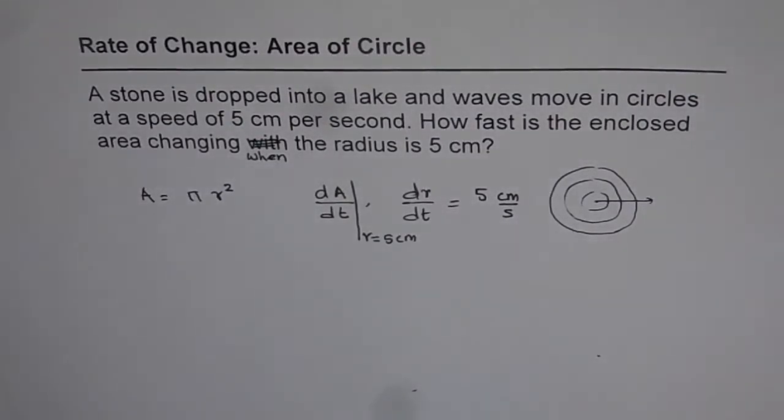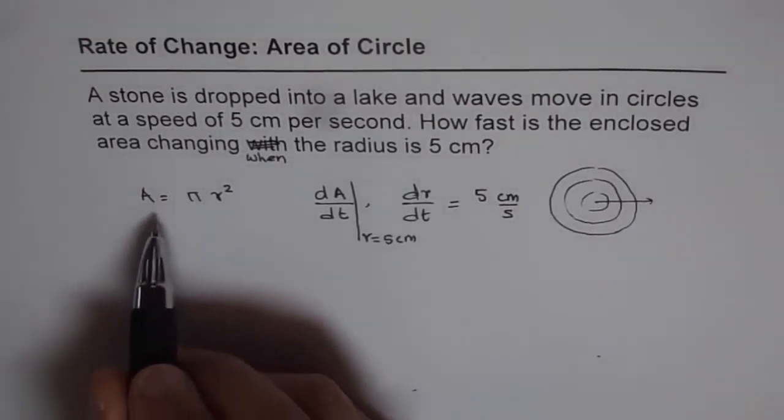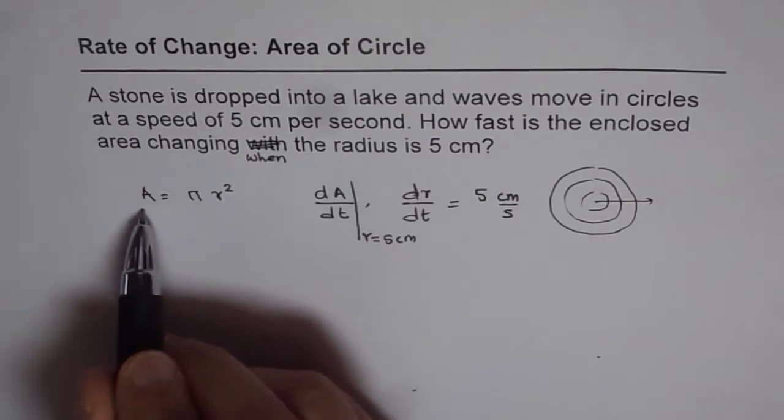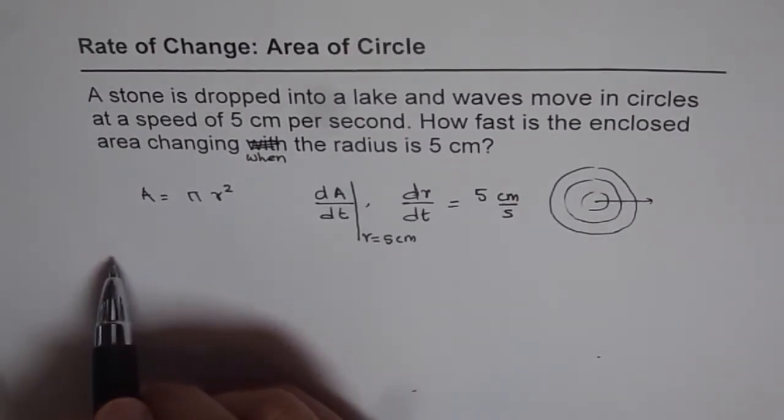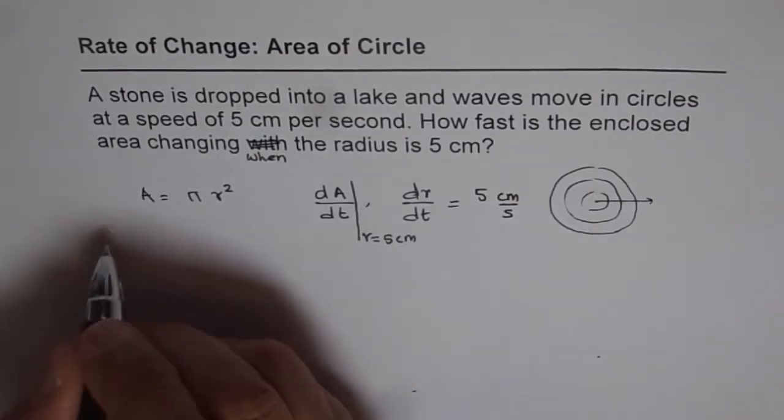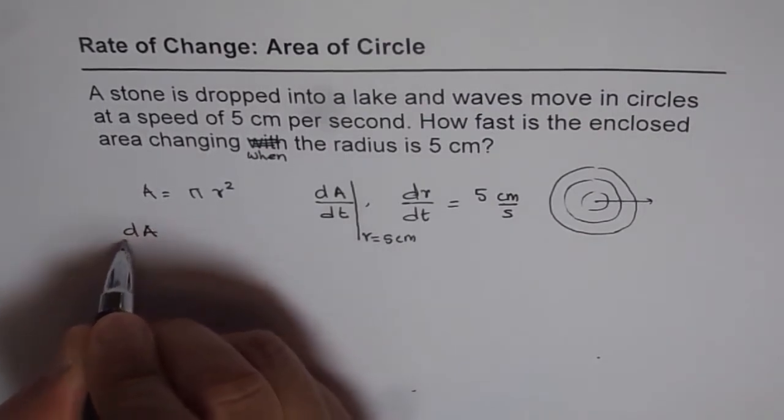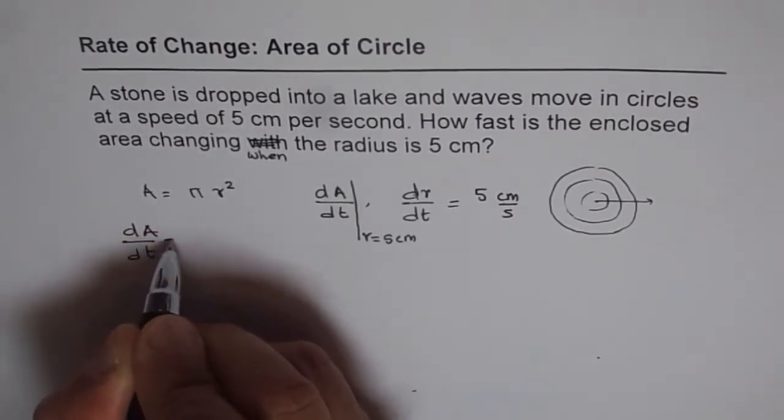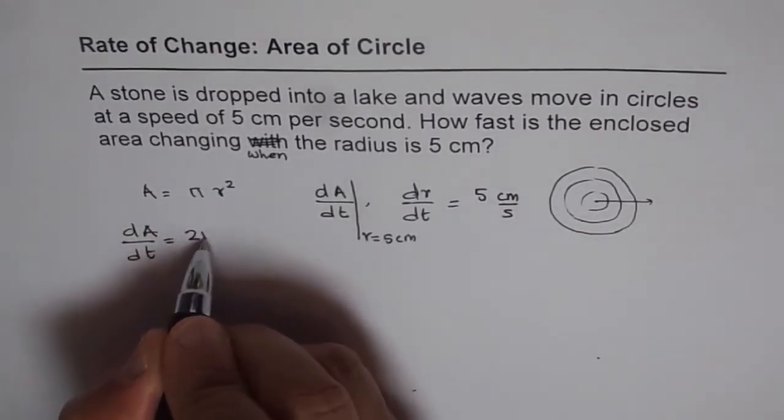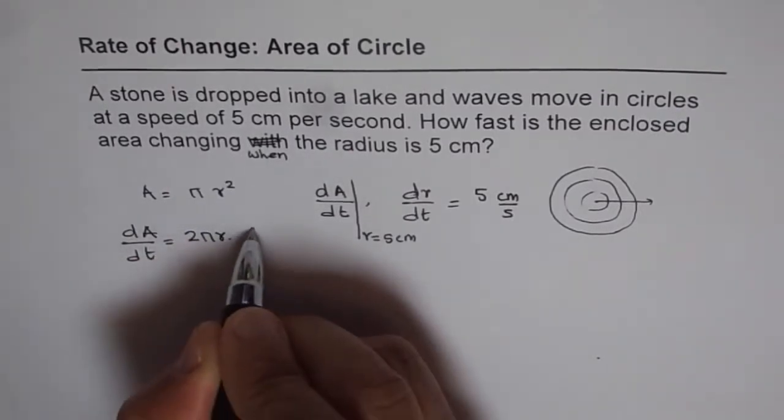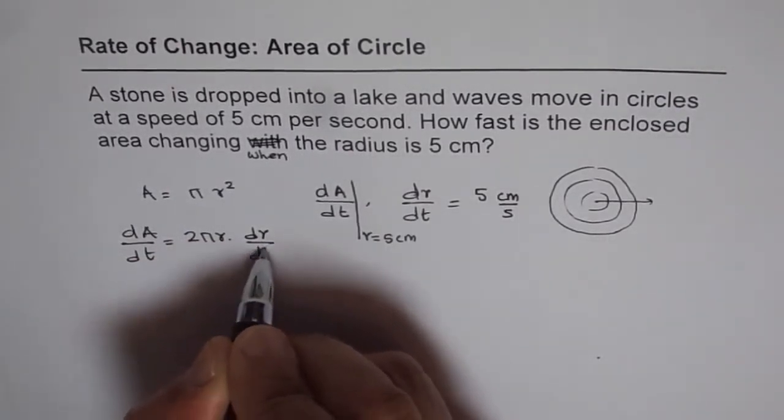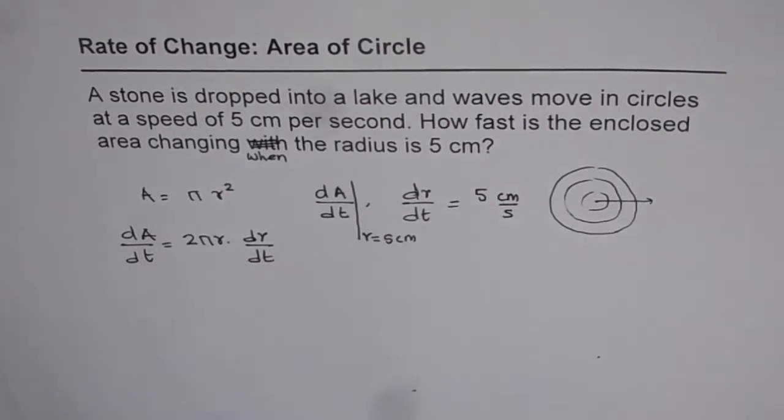So it is good to understand and visualize the situation and then do the needful. So to find this, we can differentiate both sides of this equality with respect to time. So we get dA/dt equals 2πr times dr/dt. Derivative of radius with respect to time.